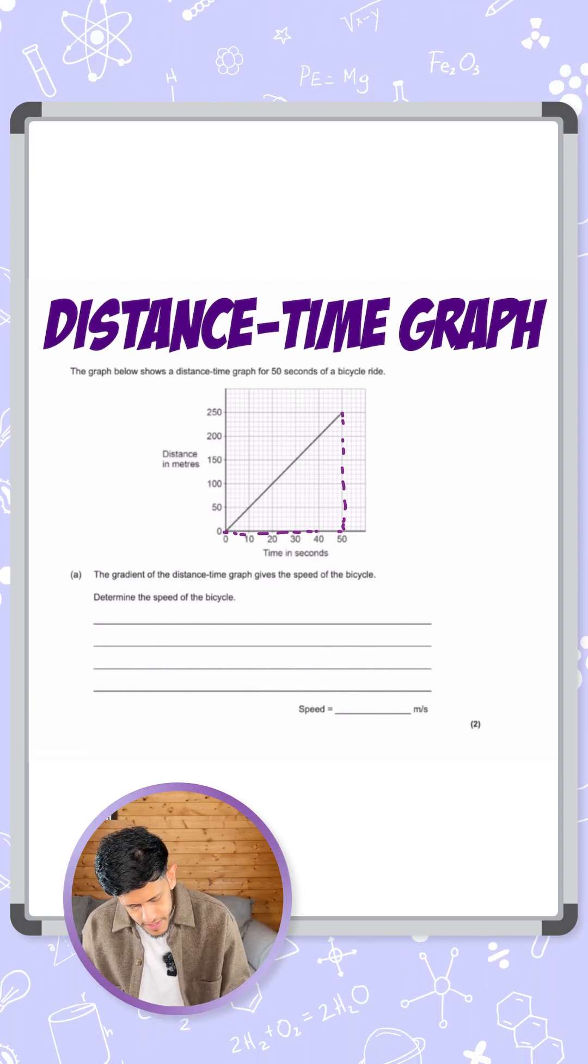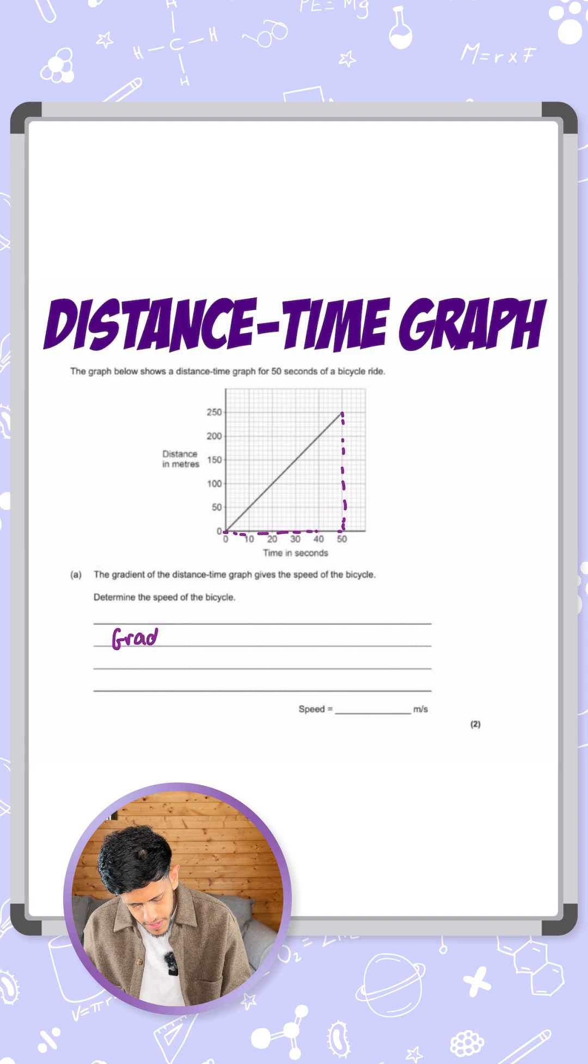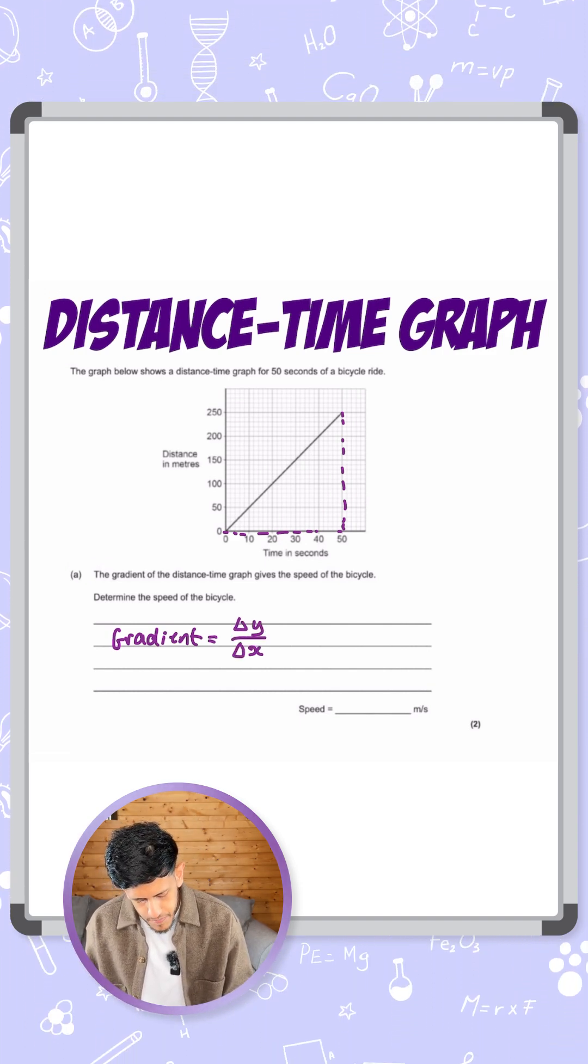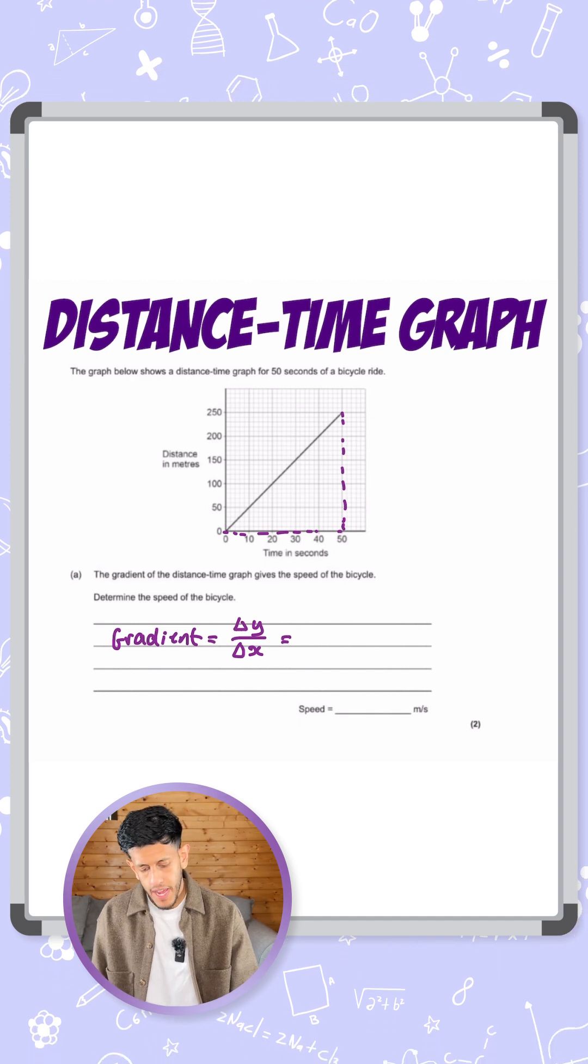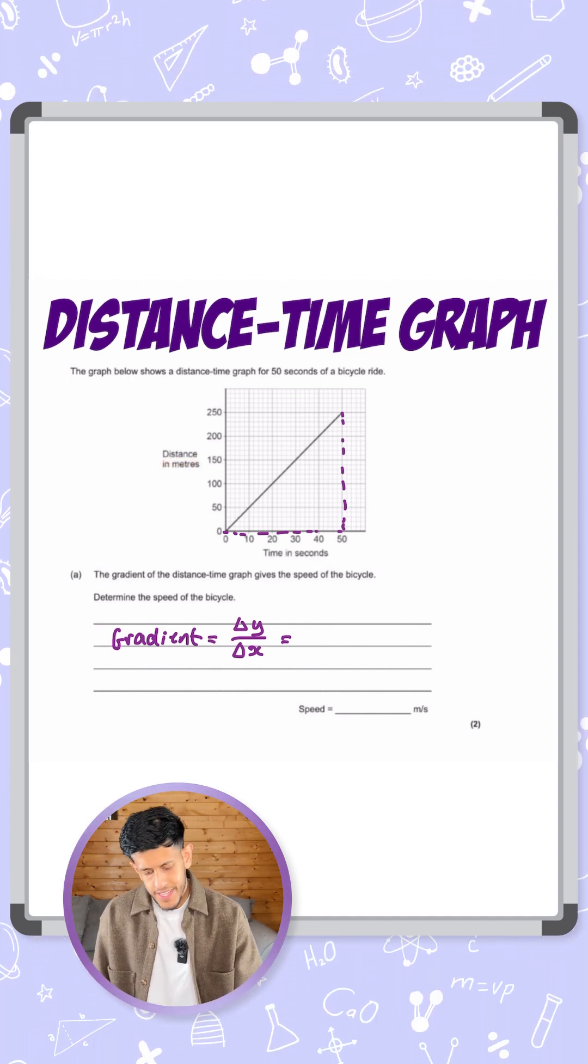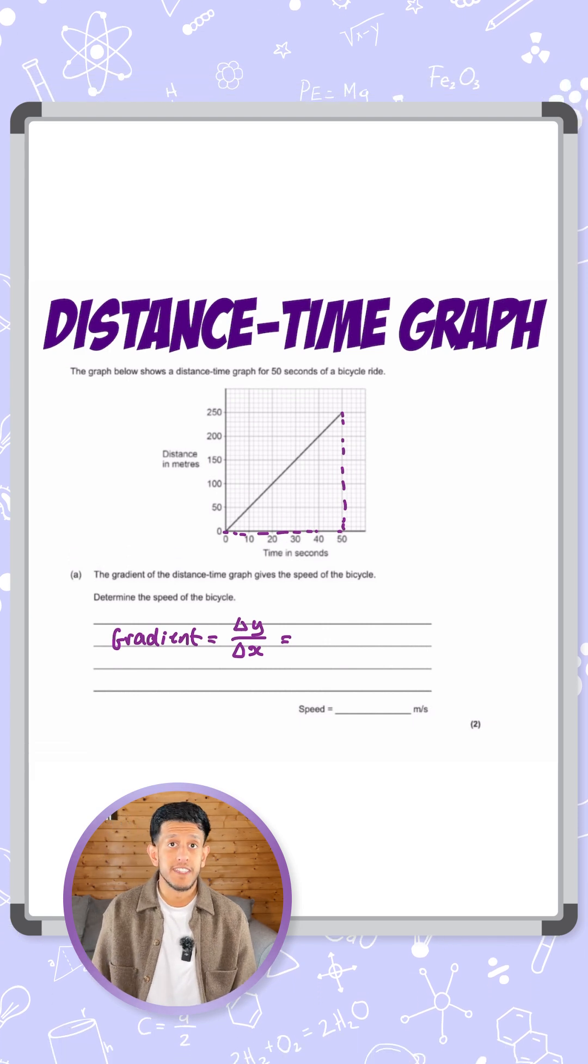If I'm calculating the gradient, I'll put gradient equals, and then from maths you may remember, it's change in y over change in x. Now the change in y, in this case the y-axis referring to the distance, we can see the change in the distance is from 250 to zero.